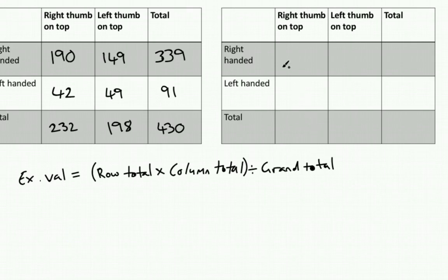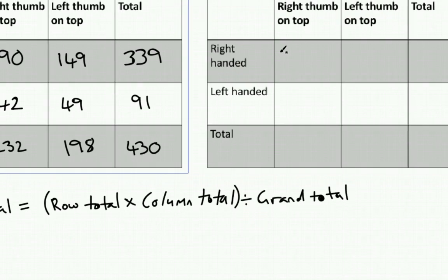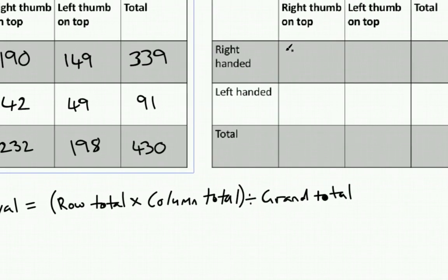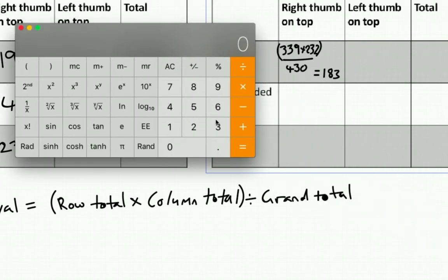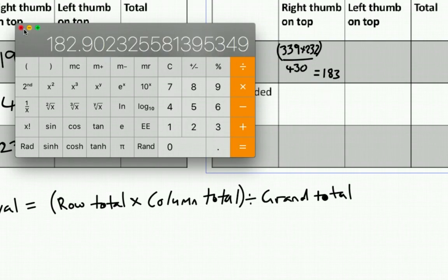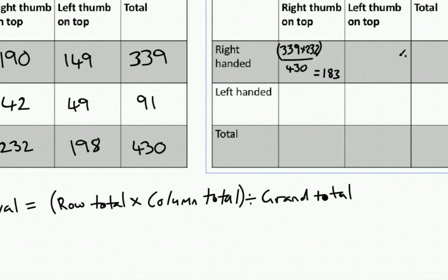For our data, let's plug those values in. For right thumb and right-handed: our row total is 339, multiplied by our column total of 232, divided by 430. Running that through a calculator — 339 multiplied by 232 equals 78,648; divided by 430 gives 182.9, which I've rounded to 183. We can then use the same equation for our other categories. For left thumb and right-handed: row total 339, multiplied by column total 198, divided by 430, which comes to a value of 156.